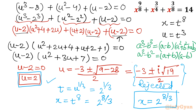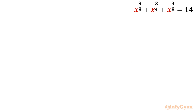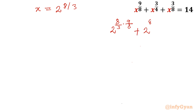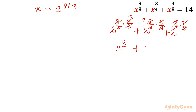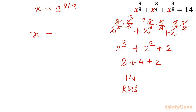Now we verify the answer. Substituting x = 2^(8/3) into the original equation: 2^(8/3 × 9/8) + 2^(8/3 × 3/4) + 2^(8/3 × 3/8) = 2^3 + 2^2 + 2^1 = 8 + 4 + 2 = 14, which equals the right-hand side. So our answer x = 2^(8/3) is correct.